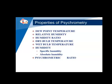There are many properties of psychrometry, such as dew point temperature, relative humidity, humidity ratio, dry bulb temperature, wet bulb temperature, and under humidity: specific humidity and absolute humidity, and finally the psychrometric ratio.